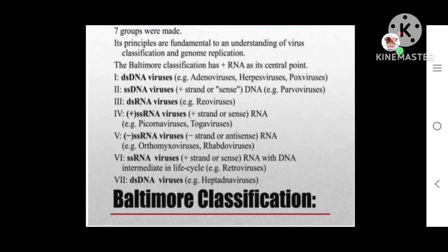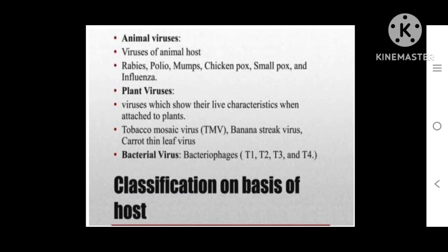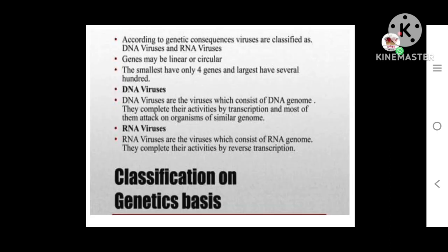The seventh group in the Baltimore classification is double-stranded DNA viruses with an RNA intermediate — example is hepadnavirus. Classification can also be based on host type: viruses that infect animals are called animal viruses (examples: rabies, polio, mumps, chickenpox, smallpox, influenza); viruses that infect plants (examples: tobacco mosaic virus, banana streak virus, carrot thin leaf virus); and viruses that infect bacteria are called bacteriophages — T1, T2, T3, and T4, with T4 being most common in the lytic cycle.